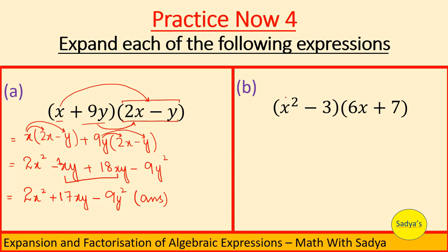Just like we did in part a, x square will be multiplied with this bracket. We get x squared bracket 6x plus 7. And then minus 3, negative 3 will be multiplied with this bracket. So we will write negative 3 and bracket 6x plus 7.